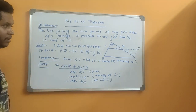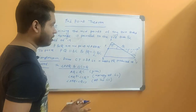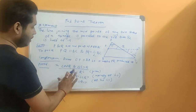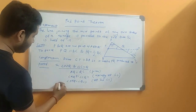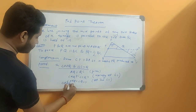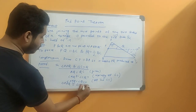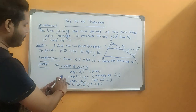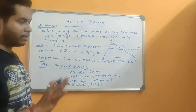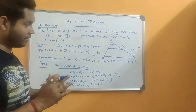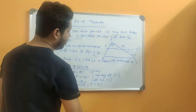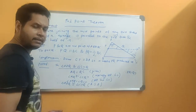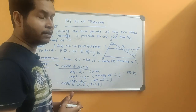So we have got three things: a side, an angle, and another angle, with the side included between the two angles. That means by ASA, we can say that triangle APQ is congruent to triangle CYQ. Therefore, by CPCT, PQ is equal to QY, and also AP is equal to YC.